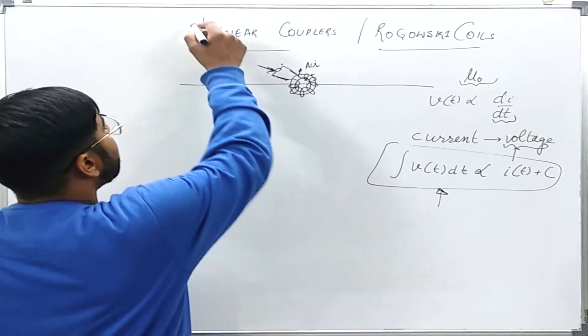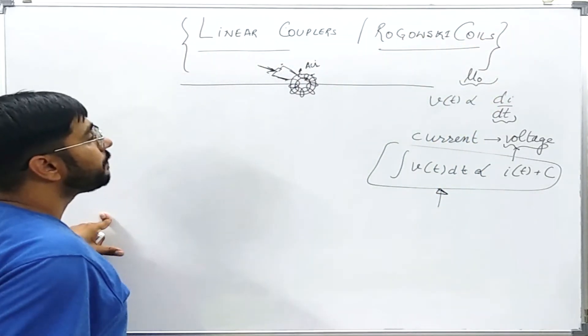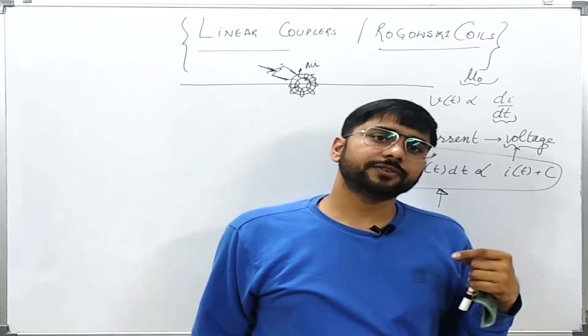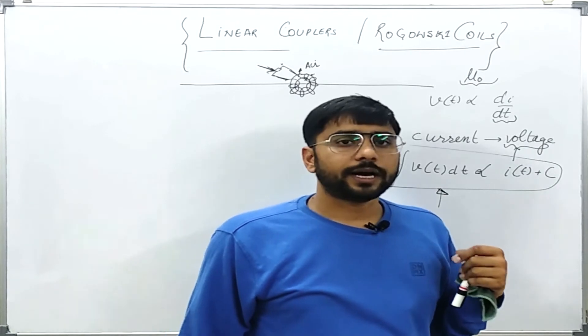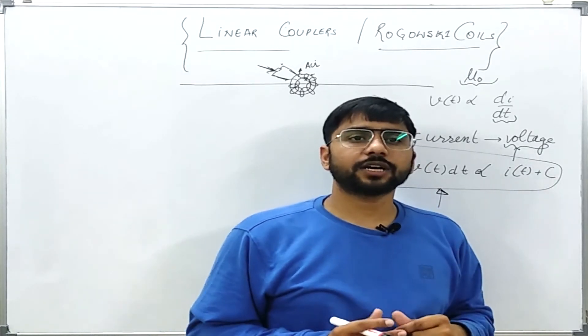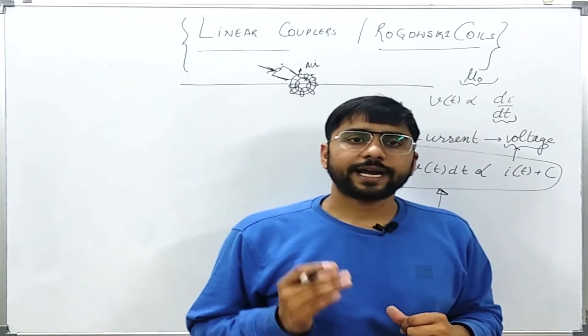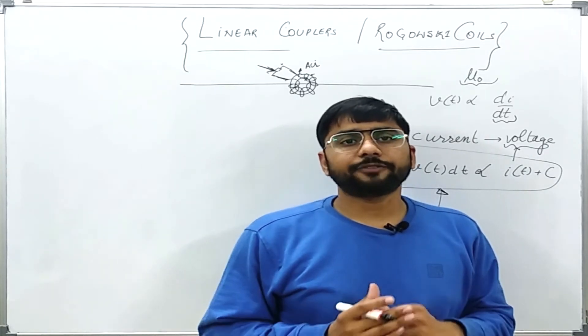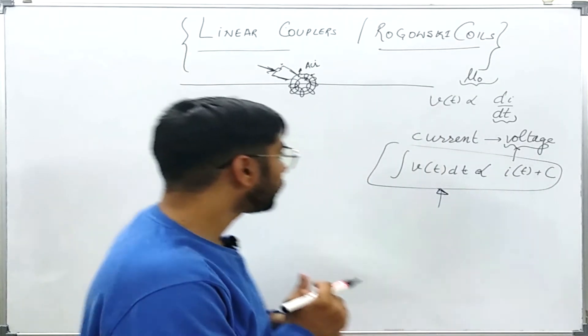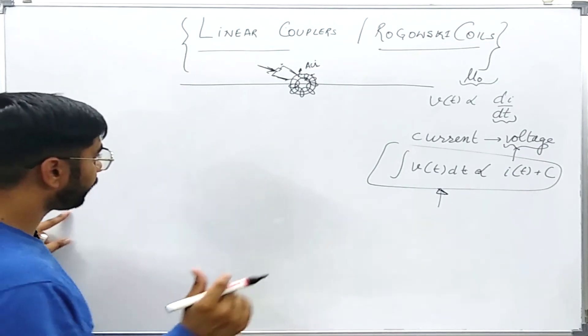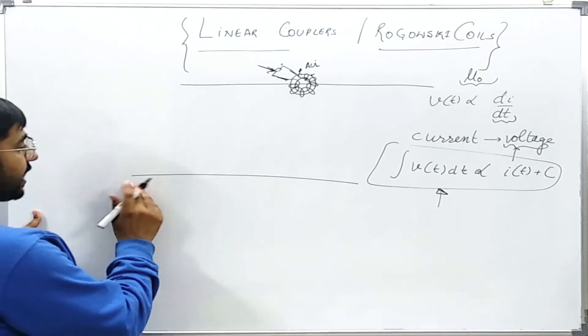There is another technology which is being developed and have been tested at some places. It is depending upon the polarization or the effect on the polarization of the light because of the magnetic field created by the current flowing in a conductor. How does it work? Let us say this is the primary conductor. It is carrying some current.